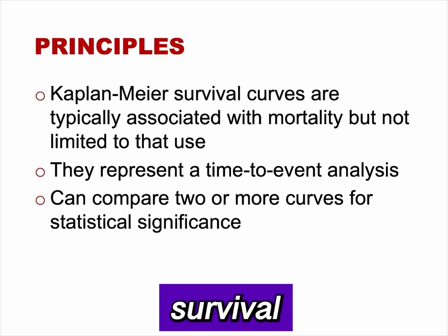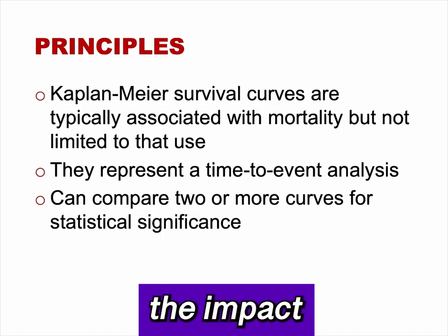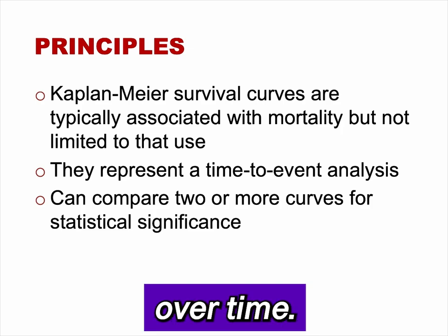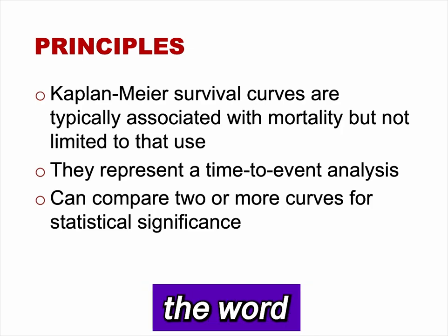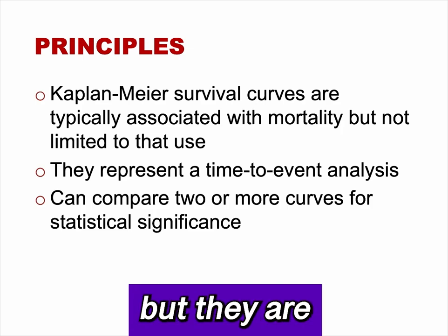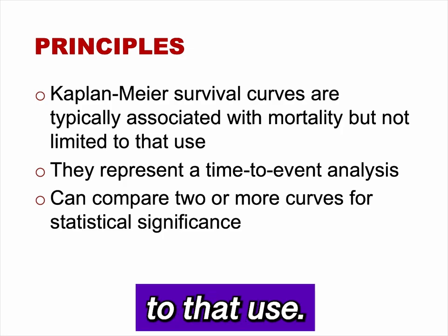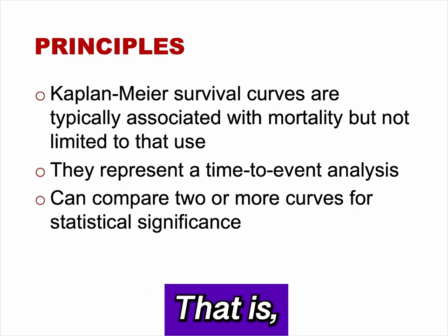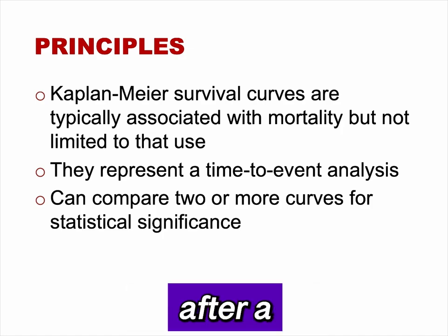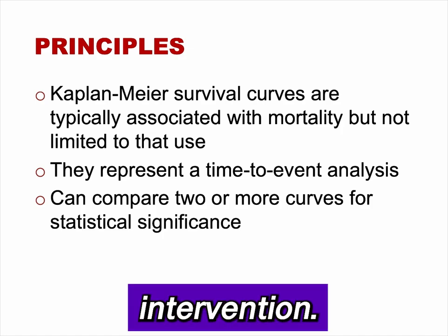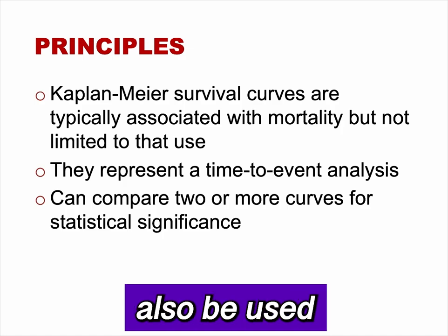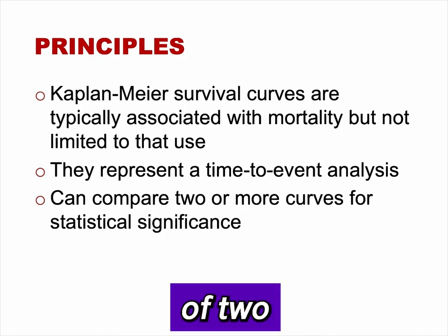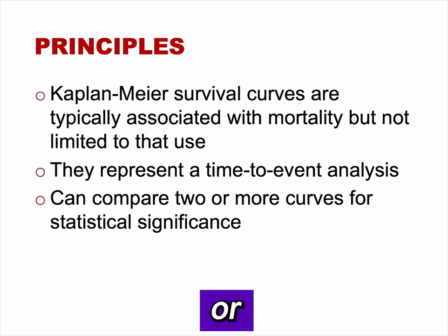Kaplan-Meier survival curves are typically used to present the impact of a prognostic factor or intervention on disease mortality over time — hence the word 'survival' in the name — but they are not limited to that use. They represent a time-to-event analysis: the time of an outcome after a relevant exposure or intervention. Kaplan-Meier survival curves can also be used to compare the influence on disease mortality of two or more prognostic factors or interventions.